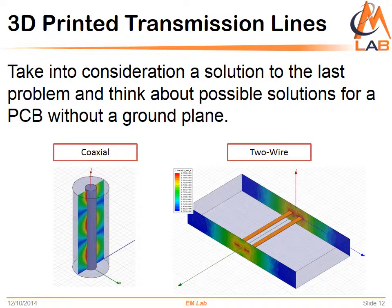If we go with a two-wire approach, we'll double the amount of lines that we need for our circuit. If we go with the coaxial, we have to have a method that prints everything in the coaxial at the same time — dielectric and metal.